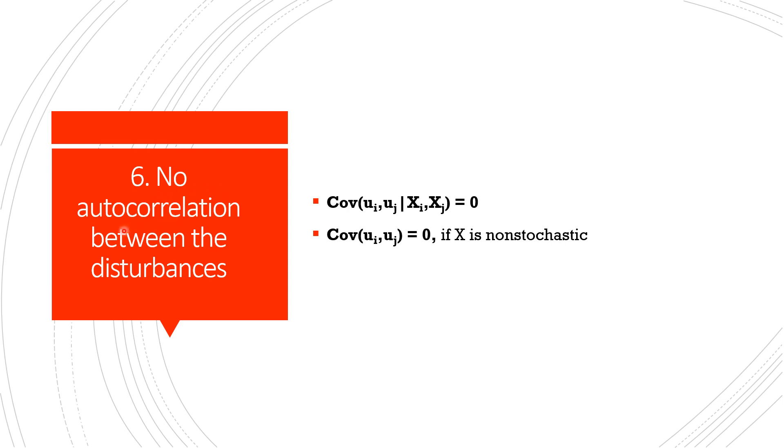Now the sixth assumption says that there should be no autocorrelation between the disturbances. That is, the correlation between any two error terms is zero. So we write it as the covariance between mu i and mu j given xi and xj is equal to zero. Or if x is non-stochastic, then covariance between mu i and mu j is equal to zero. So the disturbances mu i and mu j are uncorrelated, that is, there is no serial correlation or no autocorrelation in the model. So given xi, the deviations of any two y values from their mean values should not exhibit any pattern.